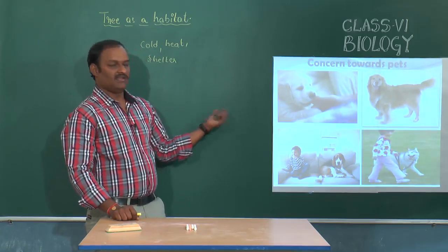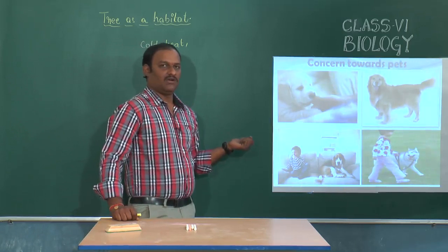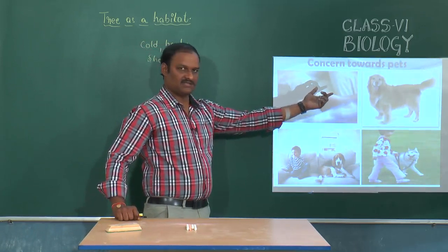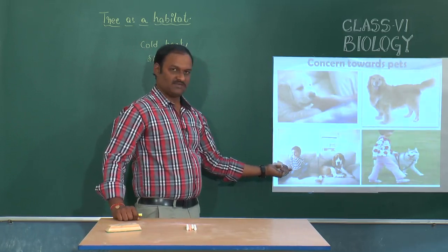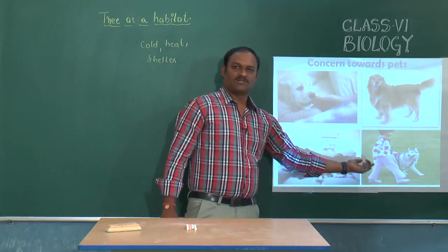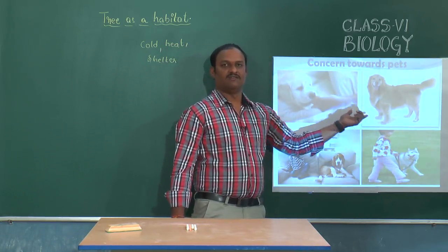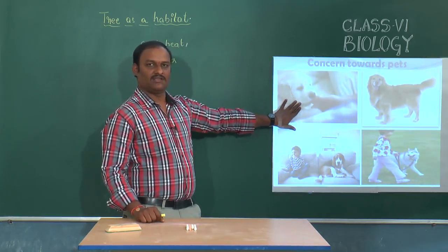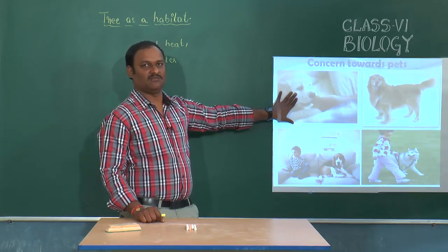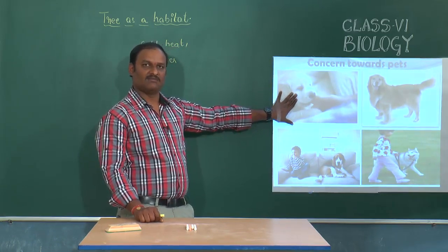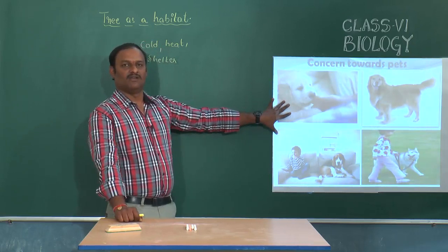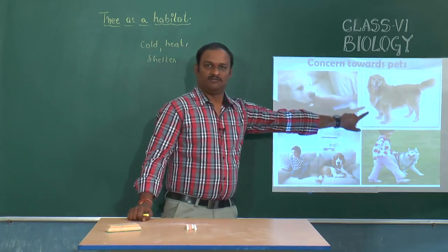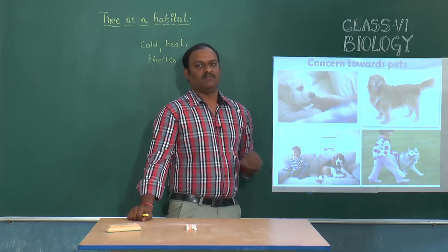For example, a dog growing in your house licks your feet, wags its tail, sits beside you, and walks with you — this is the affection a dog shows towards you. In order to get this affection from domestic animals, and as plants and animals have a right to live in this world along with human beings, we should be concerned towards our pets, animals, and plants.